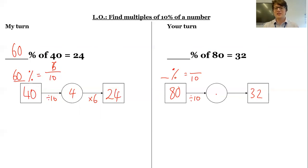So 80 divided by 10 is 8. So that's 10% of 80. So what is 32? Well, 8 times what is 32? 8 times 4 is 32. 10 times 4 is 40%. So we've found 4 tenths or 40% of 80, which is 32.